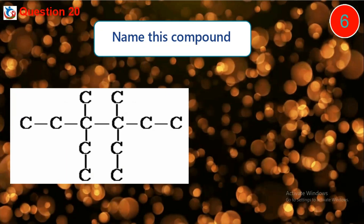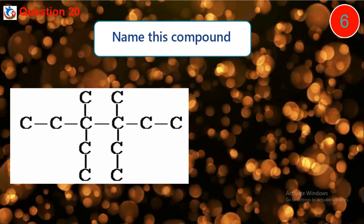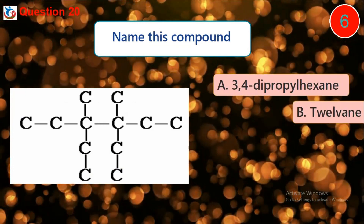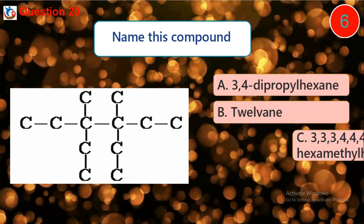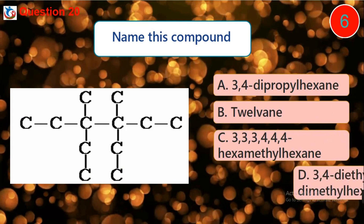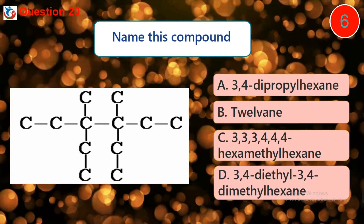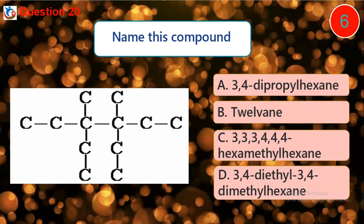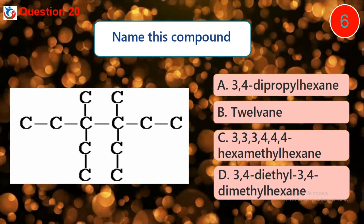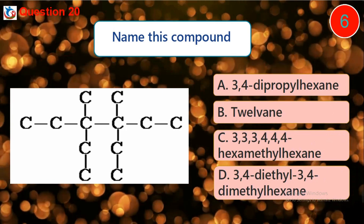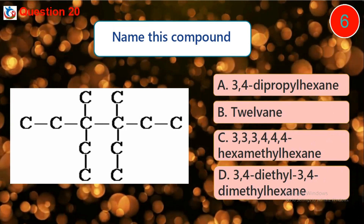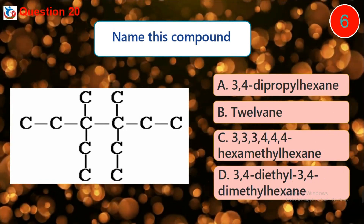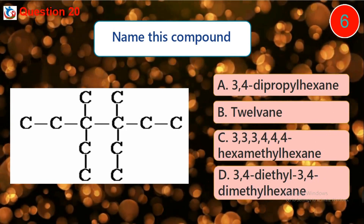Question 20. Name this compound. A. 3,4-dipropyl-hexane. B. 3,3,4,4-hexamethyl-hexane. C. 3,4-diethyl-3,3,4,4-hexamethyl-hexane.